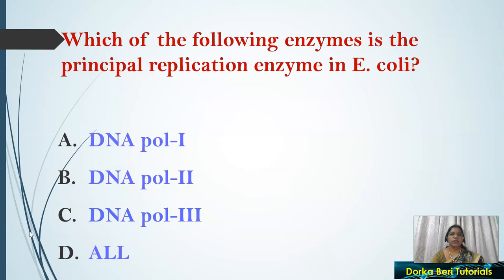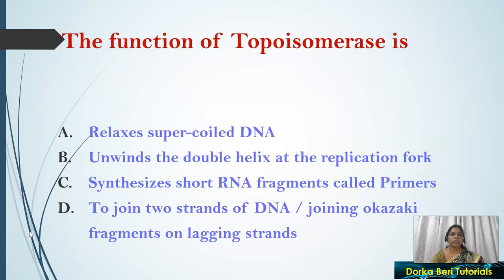Next question: Which of the following enzymes is the principal replicating enzyme in E. coli? The answer is DNA Pol 3. Next question: The function of topoisomerase is — it relaxes supercoiled DNA and removes the stress from the DNA.